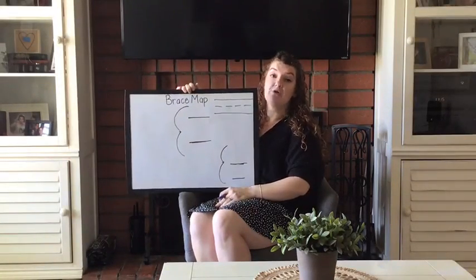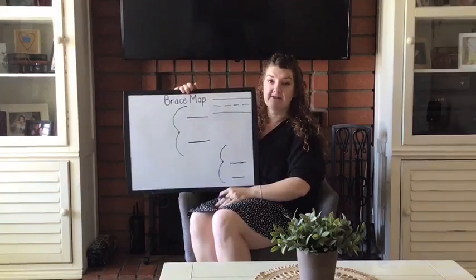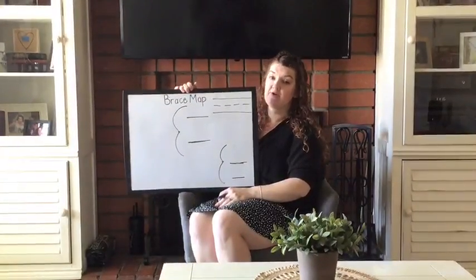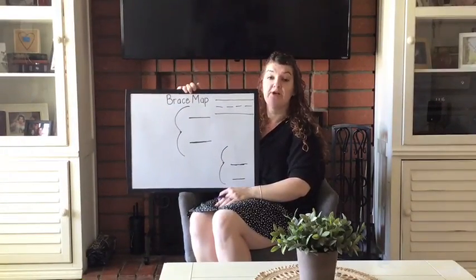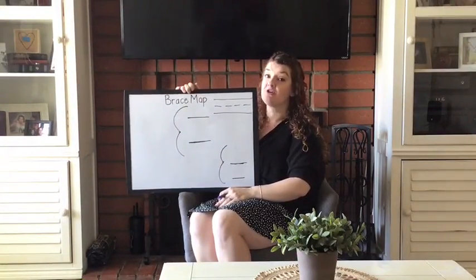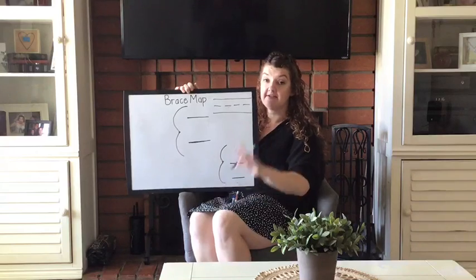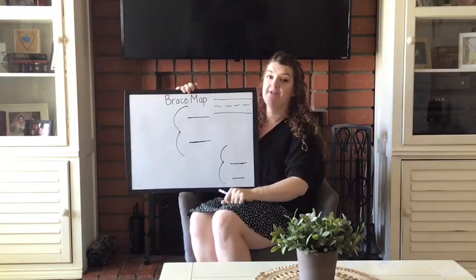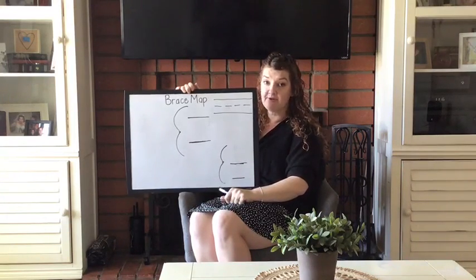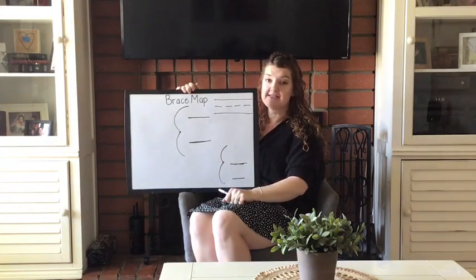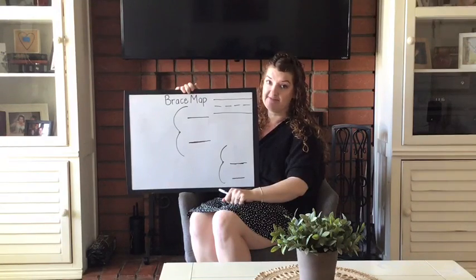Now we know a few things about letters when we start writing them. First off, we always know that we start our letters at the top. Also, letters are grounded — that means letters don't float through the sky.